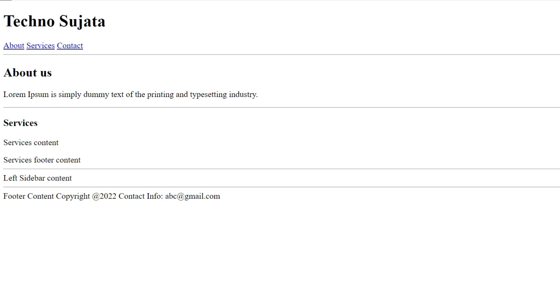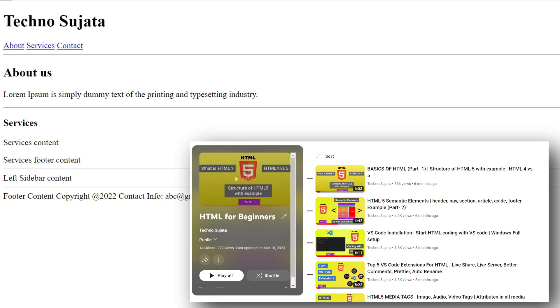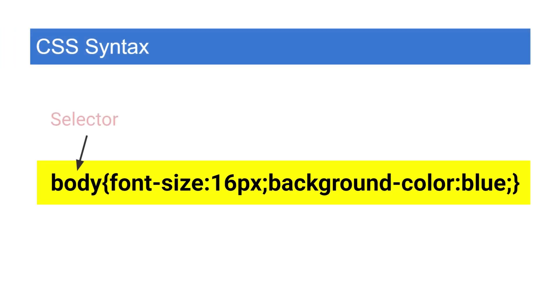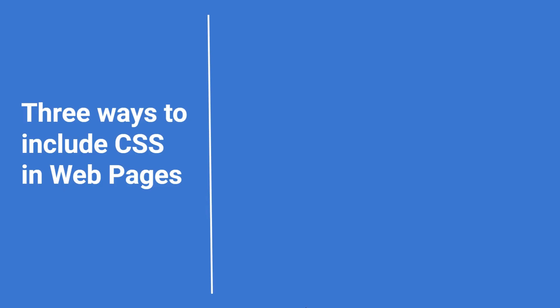If you don't know how to create an HTML file and how to add elements in that file, please go through my HTML beginners playlist first. Let's see CSS syntax. CSS syntax is a combination of selector and declaration blocks. The CSS selector points to HTML elements, and inside the declaration block we declare property and value pairs. Inside the declaration block you can declare as many property-value pairs as needed.